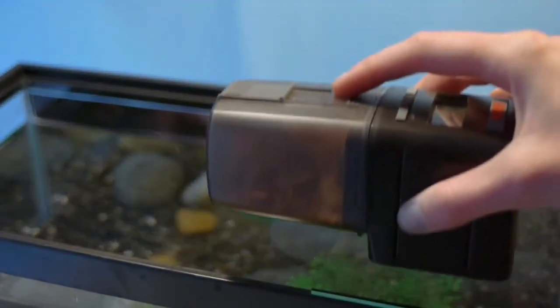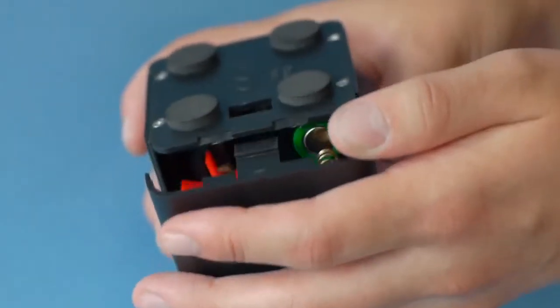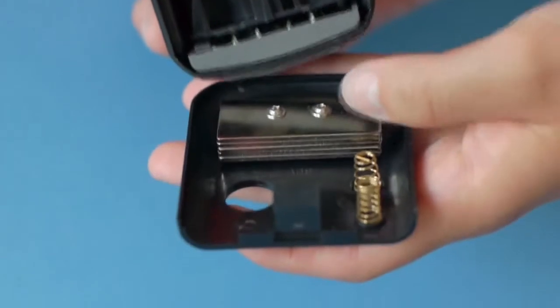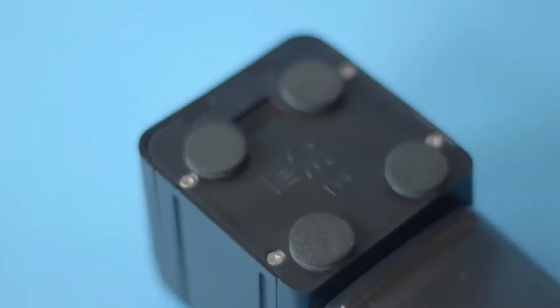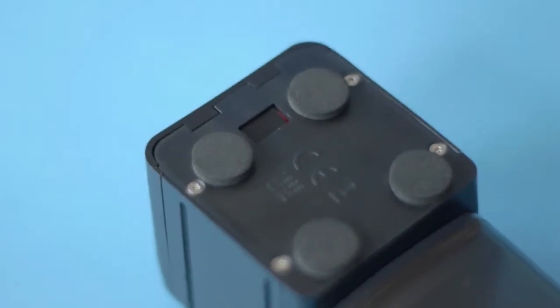Position the feeder on the aquarium so that the food can fall freely onto the surface of the water. The Eheim Everyday Fish Feeder is designed with a weighted drive control. This balances the feeder and prevents it from tipping over when filled and allows it to sit firmly on most aquariums. All four cushion legs must be on a flat surface to avoid falling.